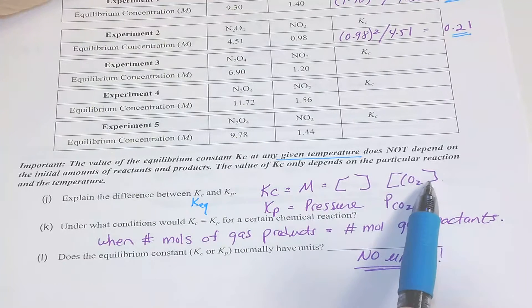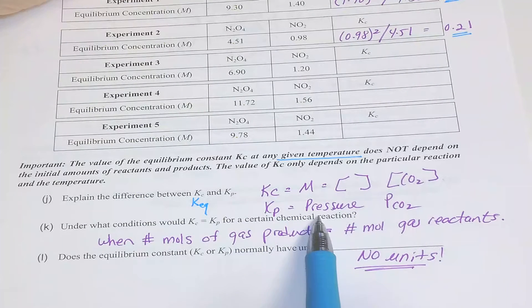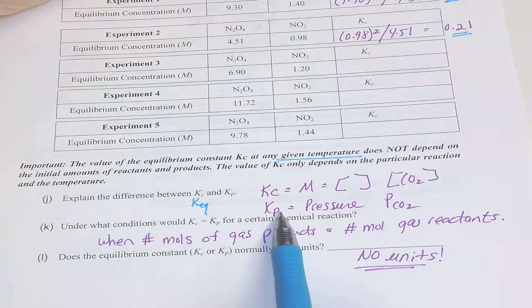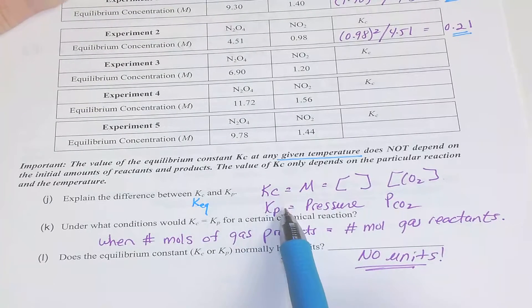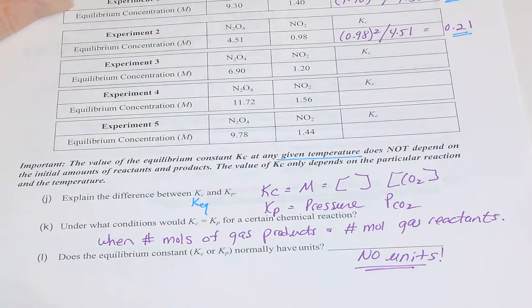And that is always shown with brackets. Pressure can also be a way to represent concentration, and that is KP. There's still an equilibrium constant just with respect to pressure versus concentration.